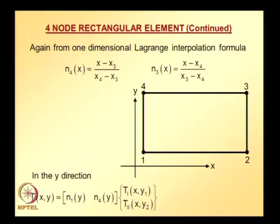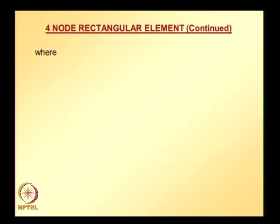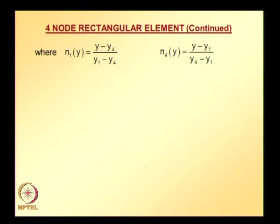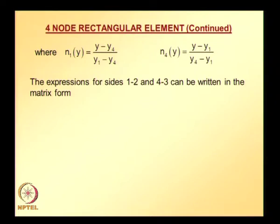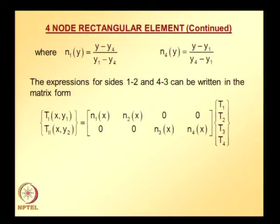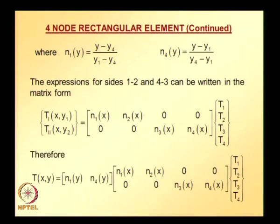N1 and N4 can be obtained by writing one-dimensional Lagrange interpolation in the y-direction. Expressions for sides 1-2 and 4-3 can be written in matrix form — T1 and T2 are written together in matrix and vector form. Substituting the T1, T2 vector into the previous equation and carrying out multiplications of N1, N4 with the matrix containing N1, N2, 0, 0, 0, 0, N3, N4, we get the result.